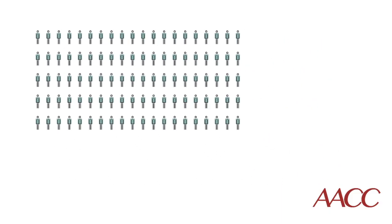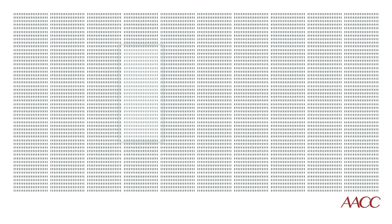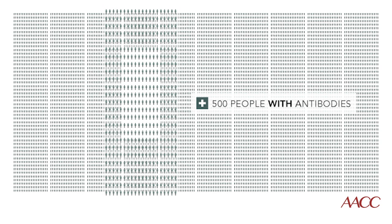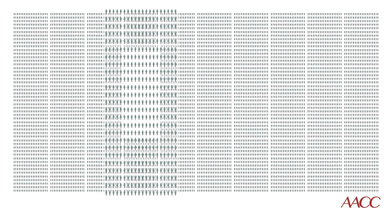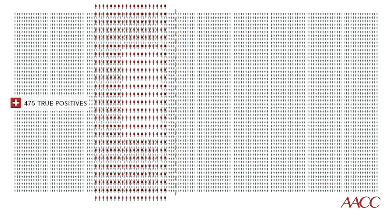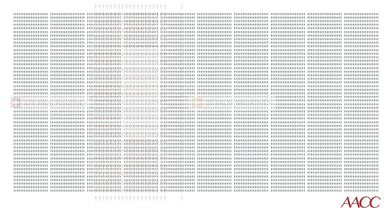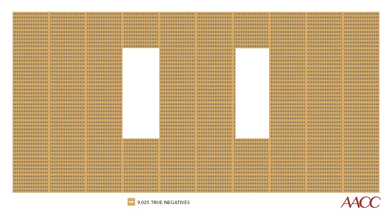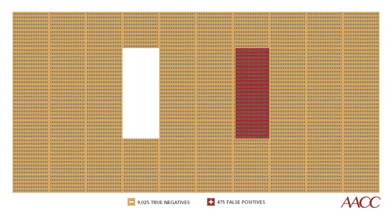Let's use that antibody test with 95% sensitivity and specificity to test a population of 10,000 people in which the prevalence of antibodies is 5%. That means 500 out of those 10,000 people actually have antibodies. Of those 500, there will be 475 true positives and 25 false negatives. Among the 9,500 people who truly don't have antibodies, there will be 9,025 true negatives and 475 false positives.